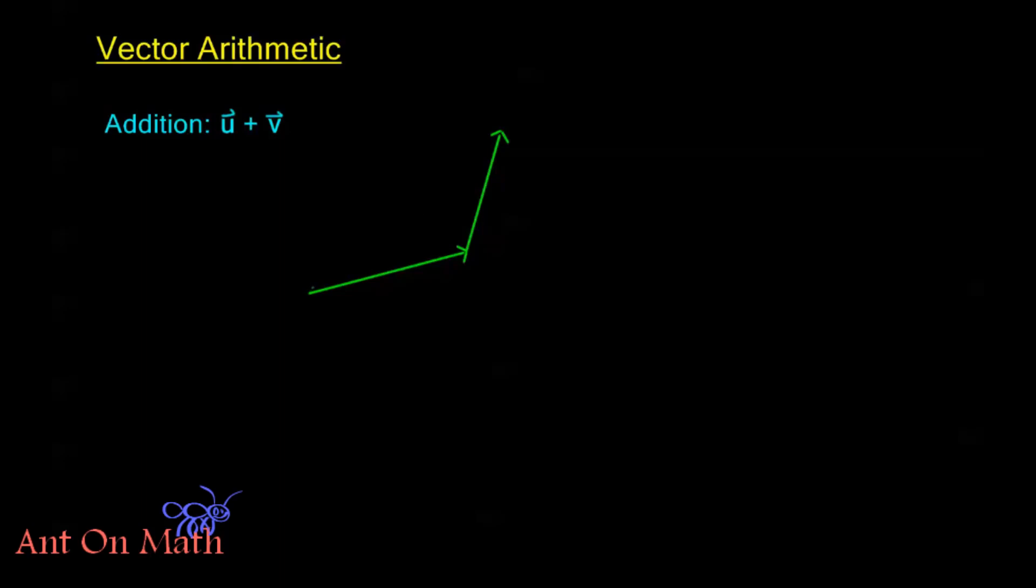And the total resulting displacement after these two displacements occur is the sum u plus v. So let me document that. If this is my vector u down here, this is my vector v, we line them up tail to end, or let me say front to back.